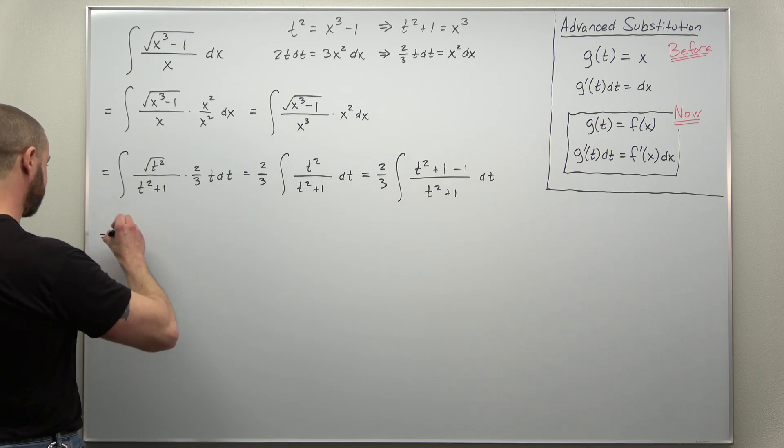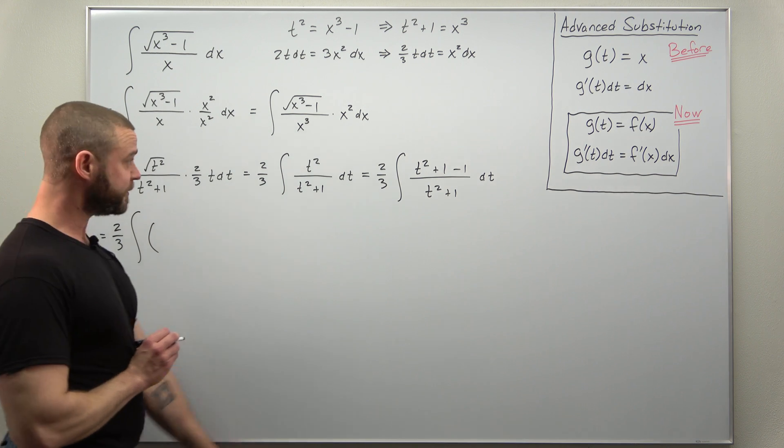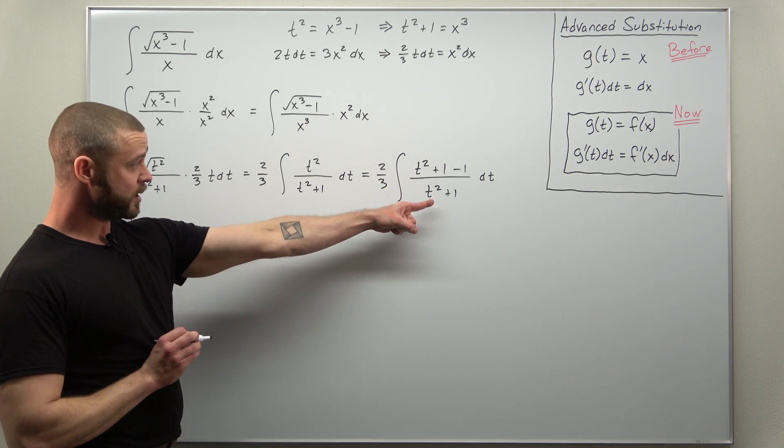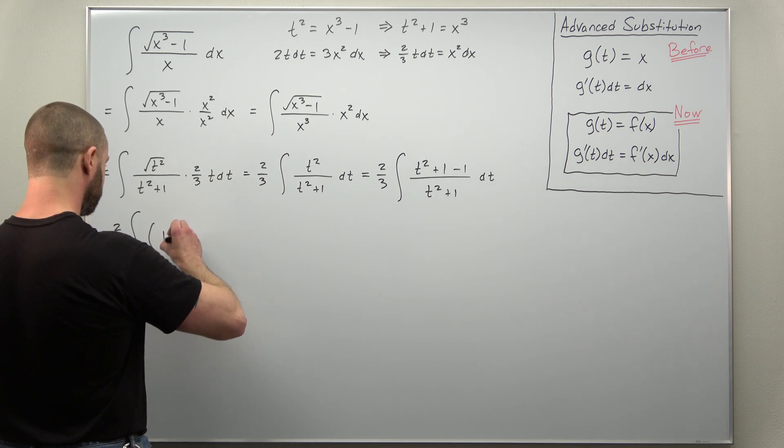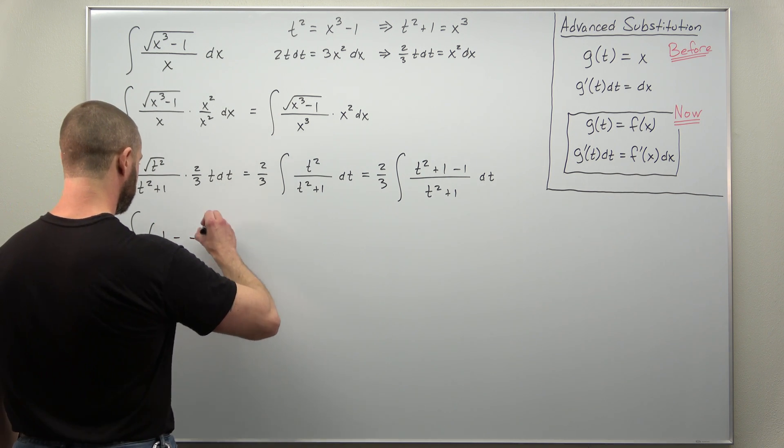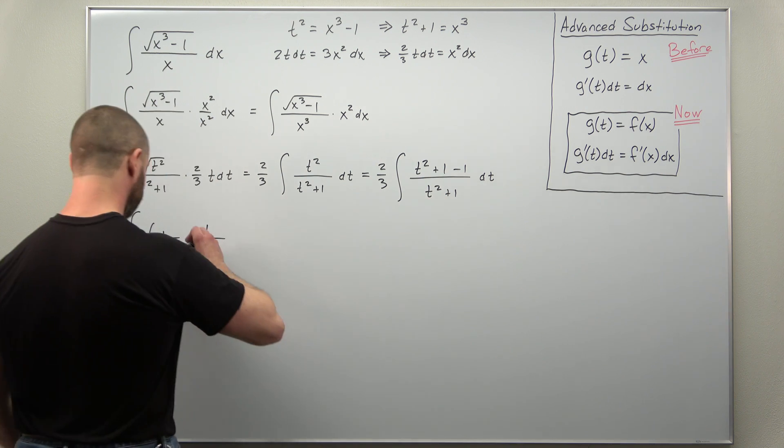We're almost done. We'll keep the two-thirds out front. And then we'll simplify this t squared plus 1 divided by t squared plus 1, we'll cancel to 1. And then we'll have minus 1 divided by t squared plus 1.